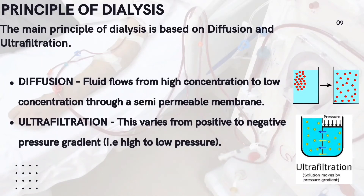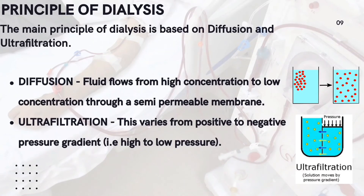The main principle of dialysis is based on diffusion and ultrafiltration. In diffusion, fluid flows from high concentration to low concentration through a semi-permeable membrane. Impurities from blood diffuse into the dialysate, while electrolytes and minerals diffuse into the blood from the dialysate, and purified blood is returned to the body. In ultrafiltration, excess fluid is removed from the body by moving from positive to negative pressure gradient — blood comes under positive pressure and dialysate comes under negative pressure.